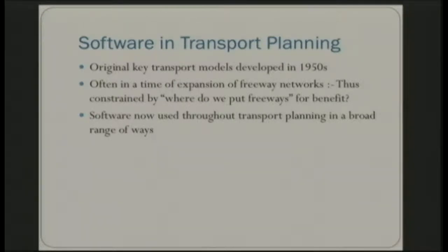There's a long history of software in transport planning. People originally developed what's called the four-step travel demand model to look at designing new road infrastructure and where to put it. Over the years there were requirements to add things like air pollution implications, so new processes were added to the model. Our understanding of how people choose transport and behaviour has changed a lot as well, so the models have evolved. But a lot of the ones in use today for big decisions — major state planning frameworks — are still based on those four-step models from the 50s and 60s. Software is obviously used much more broadly now with various forms of GIS tools.